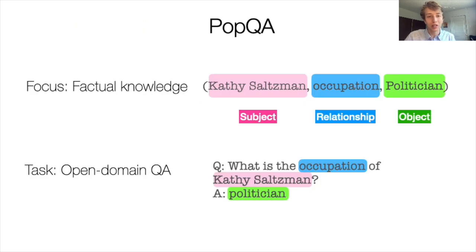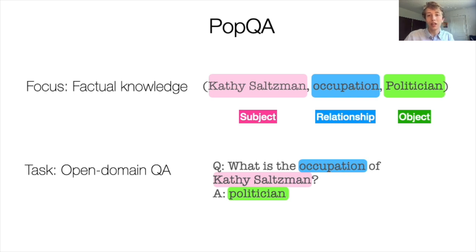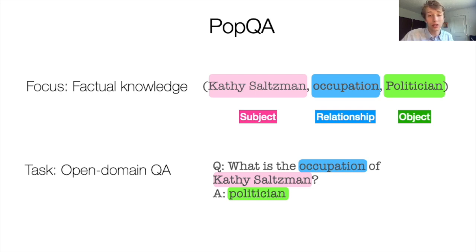To begin to investigate some predictors of factual knowledge, we create a new dataset, PopQA, which focuses on atomic forms of factual knowledge grounded to Wikidata. Using a knowledge triple format consisting of subject, relationship type, and object, we say that a model memorizes the knowledge if it can correctly generate the target object given the subject and relationship. We formulate this as an open-domain QA task, where we convert such knowledge triples into natural language questions as shown here.